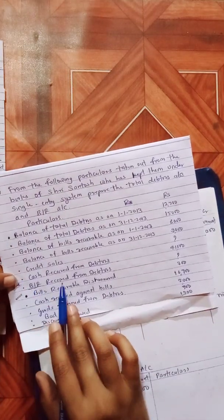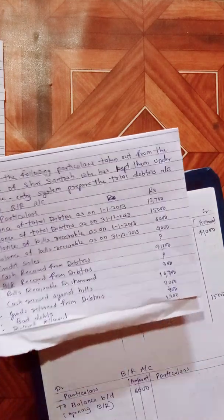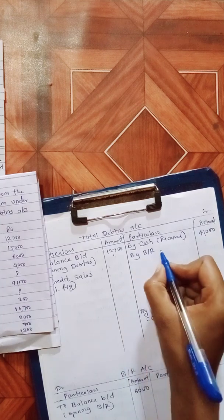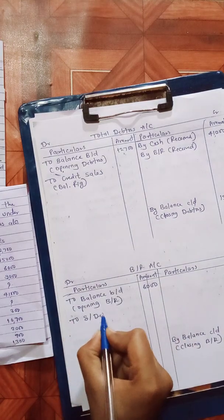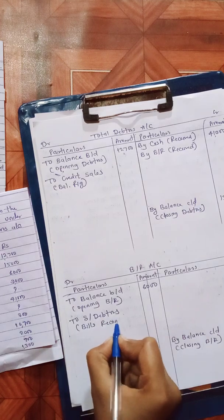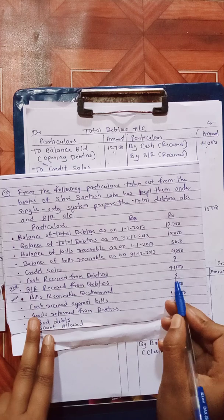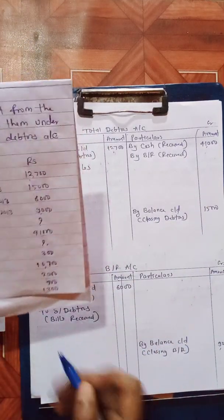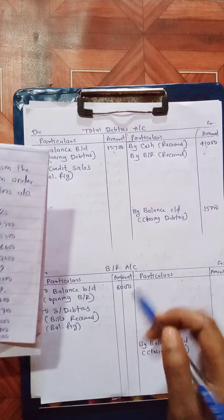Bills receivable received from debtors: this transaction means bills receivable is accepted from debtors. This item is not yet recorded — it is missing and will be found as a balancing figure. This item goes on the debit side of the bills receivable account and credit side of the debtors account.